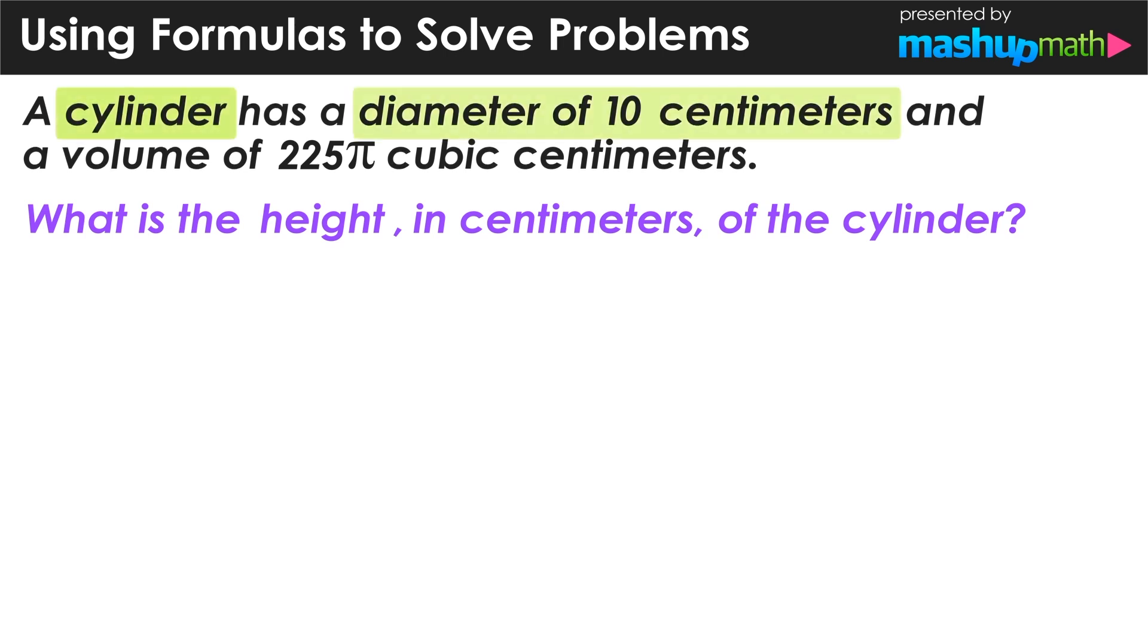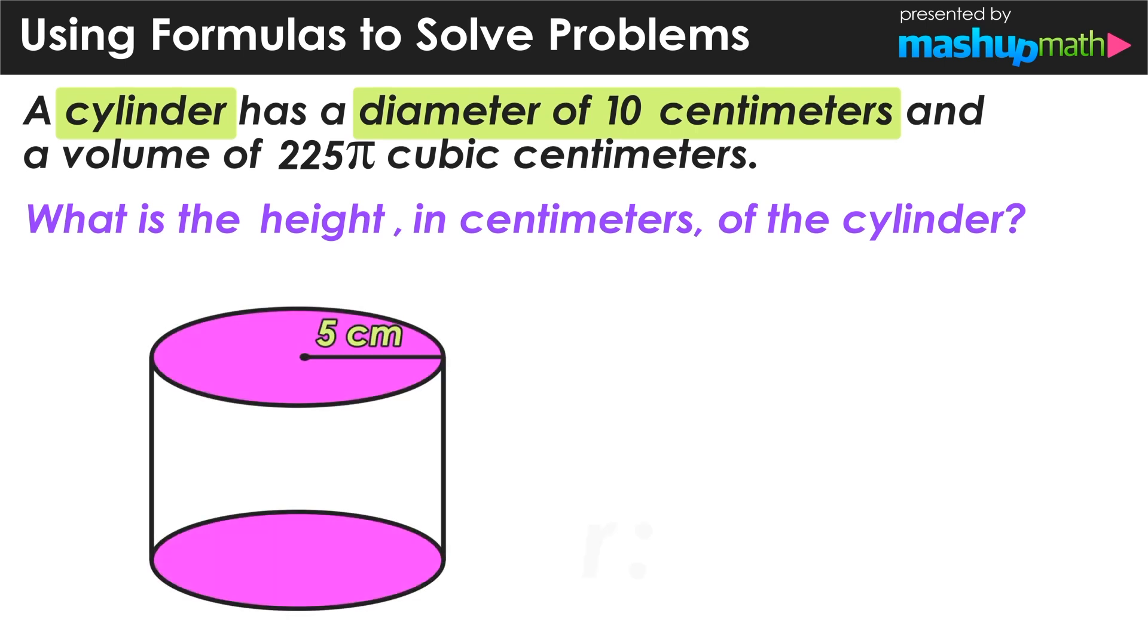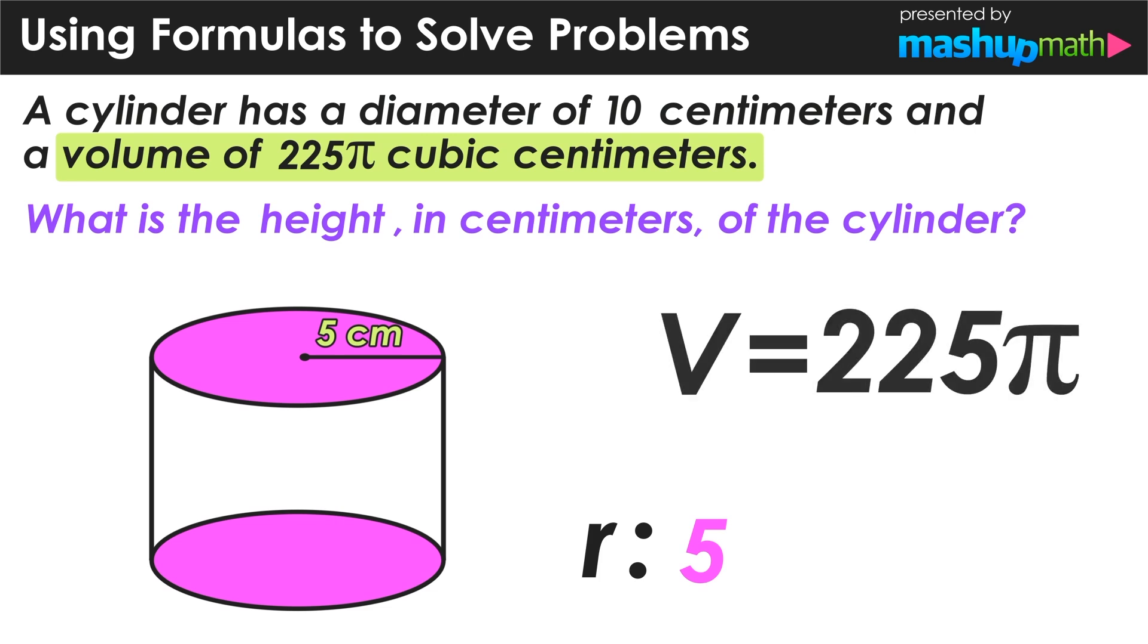We have a cylinder that has a diameter of 10 centimeters. Now we know that half of a diameter is a radius, so half of 10 is 5, so in this case the cylinder has a radius of 5 centimeters. Now the next important piece of information that we are given is that the cylinder has a volume of 225 pi cubic centimeters.